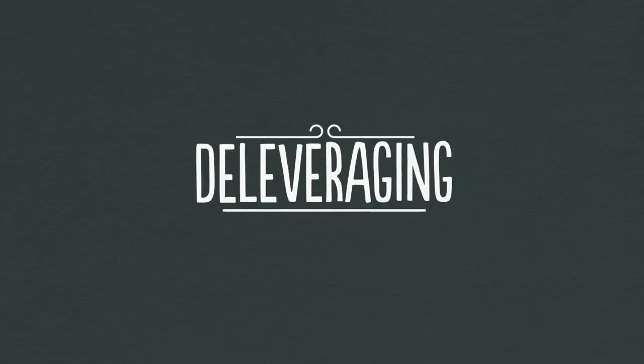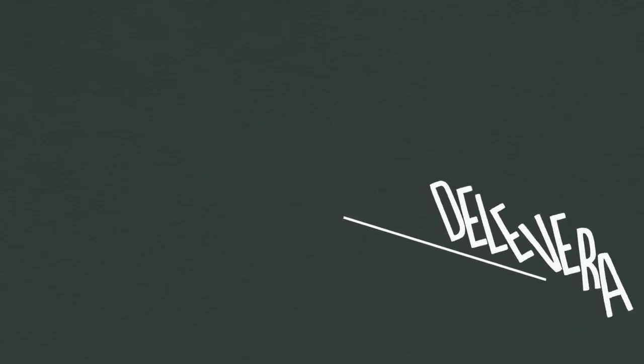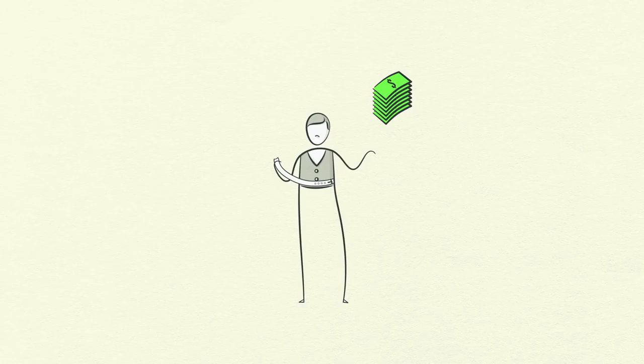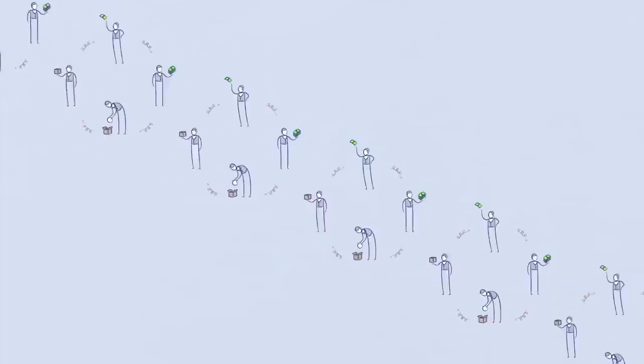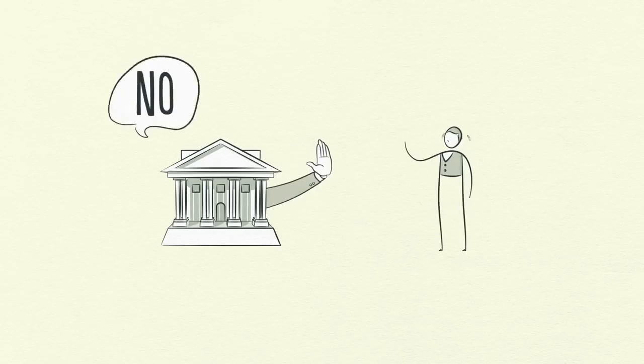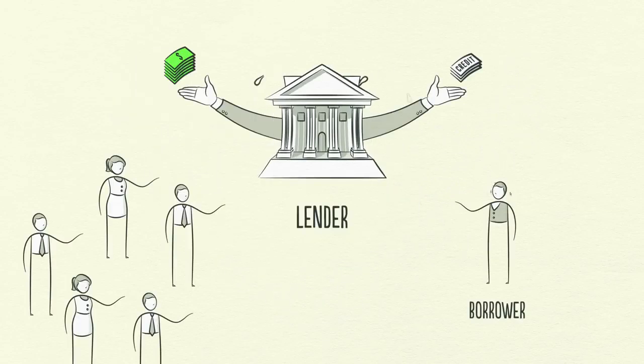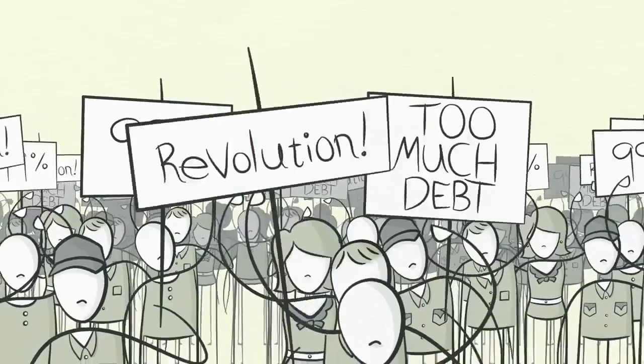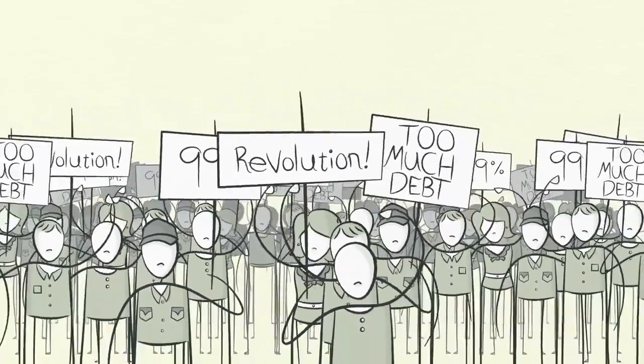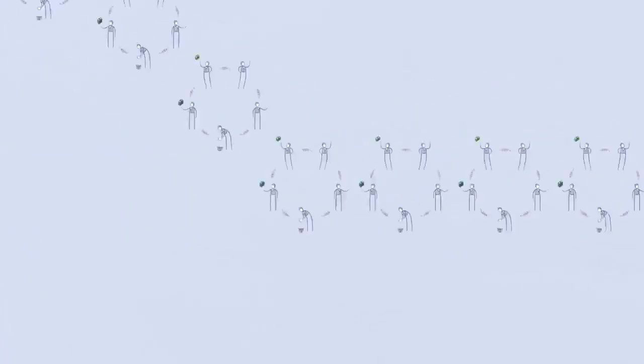Now the economy begins deleveraging. In a deleveraging, people cut spending, incomes fall, credit disappears, asset prices drop, banks get squeezed, the stock market crashes, social tensions rise, and the whole thing starts to feed on itself the other way.